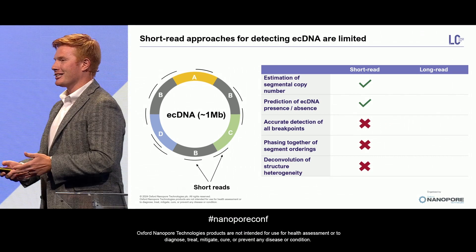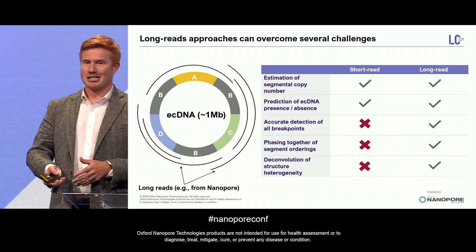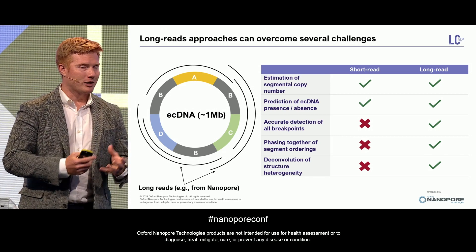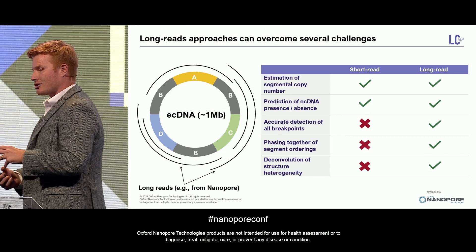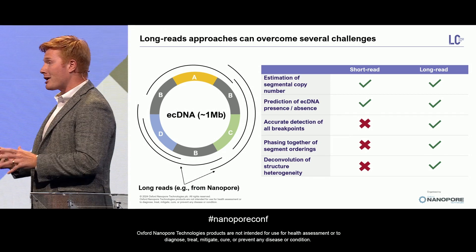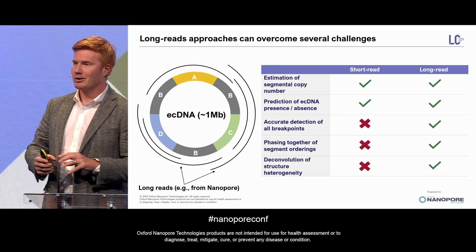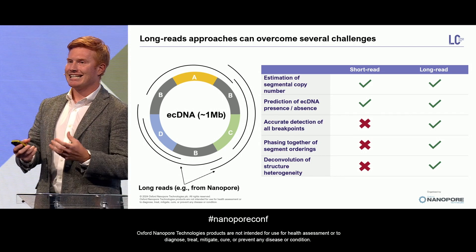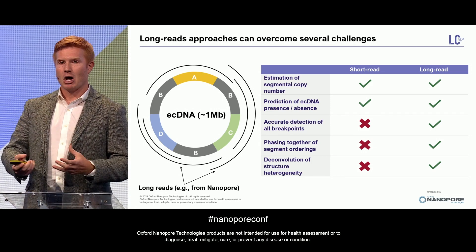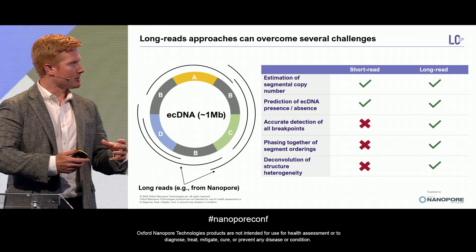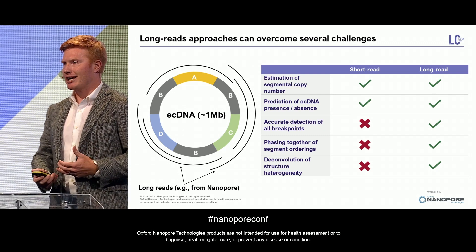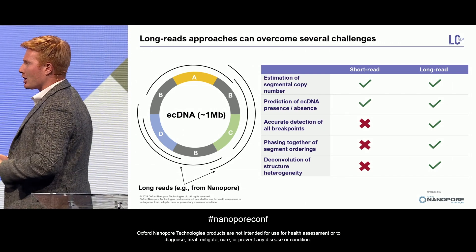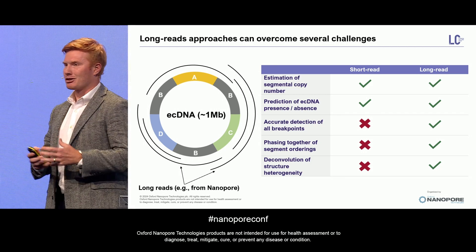Nanopore sequencing technology overcomes a lot of these issues. The ultra-long reads we're using nowadays allow us to not only better detect breakpoints or structural variants, but also phase together how these breakpoints come together to form distinct ECDNA molecules. In this way, it allows us to deconvolve the structural heterogeneity and really represent the full catalog of ECDNA molecules in a cancer population.